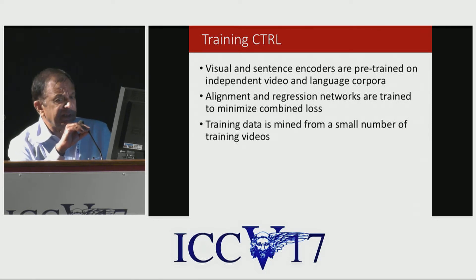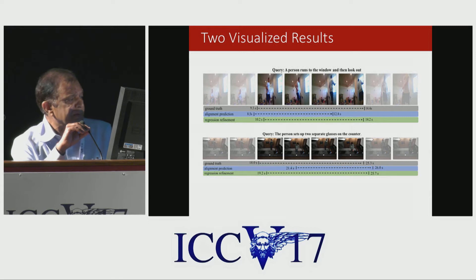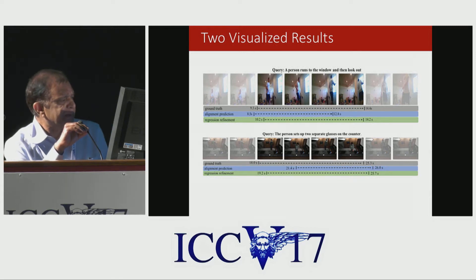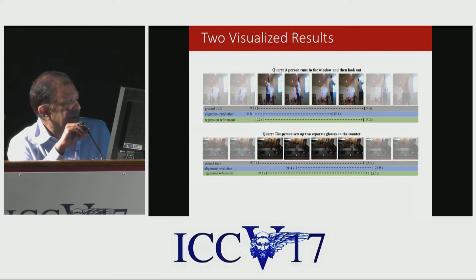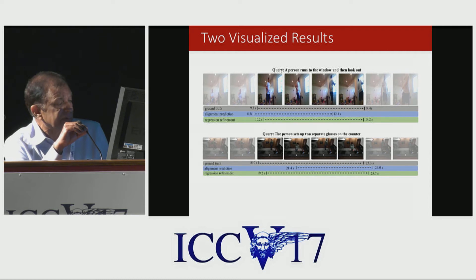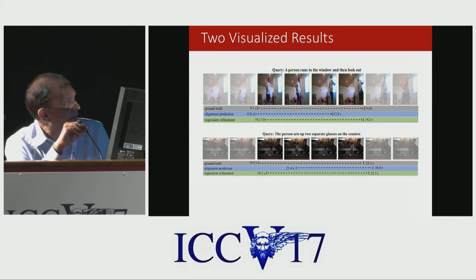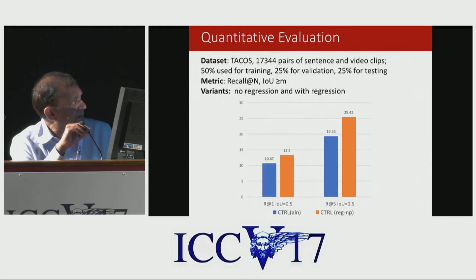We don't have much training data — only about 100 videos from which we create training samples. The first example shown is the one I mentioned: a person runs to the window and looks out. You can see the ground truth interval, the alignment without regression, and alignment after regression — it's very close to the ground truth. A second example shows a person setting up two separate glasses on the counter, illustrating the complexity of the data.